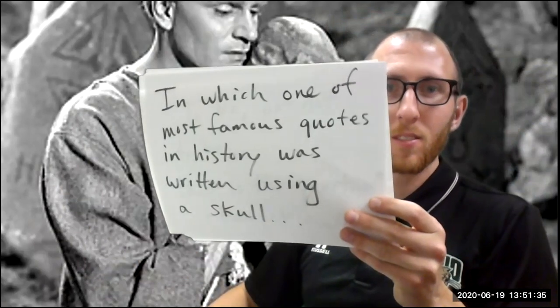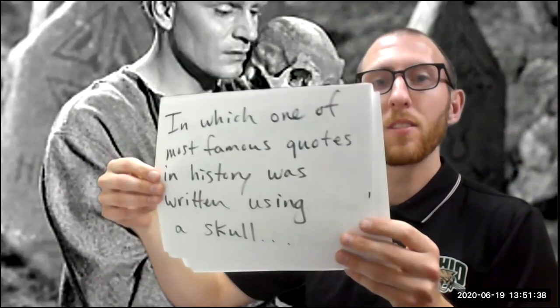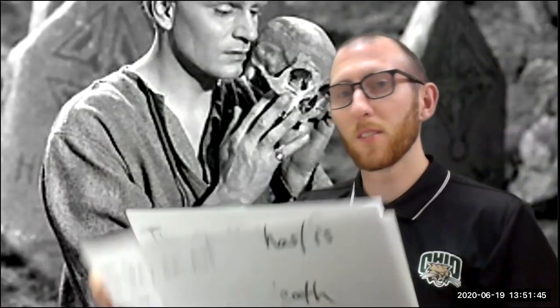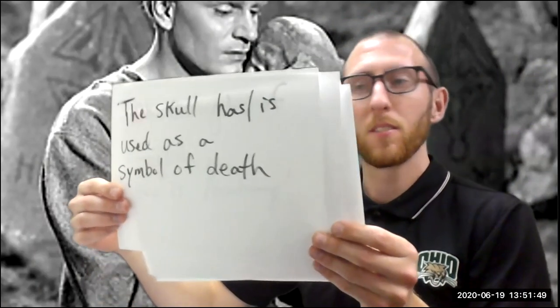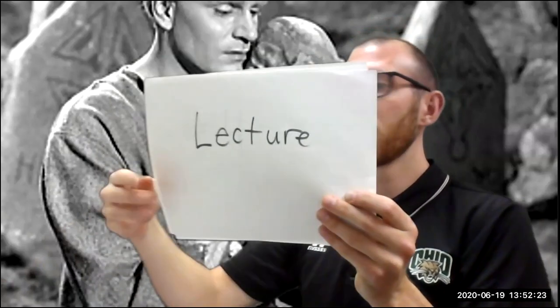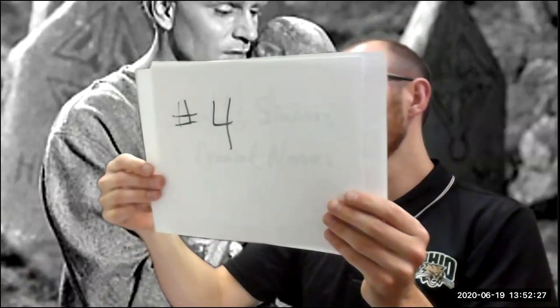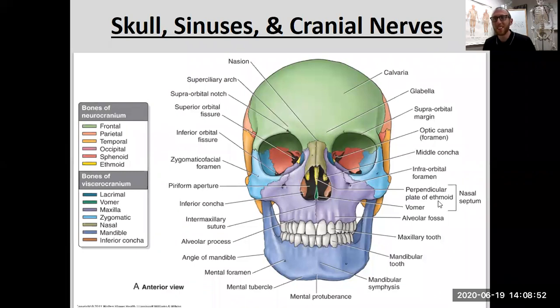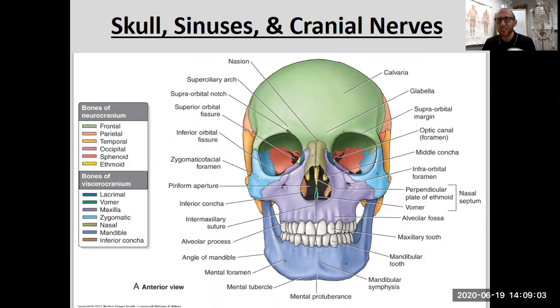Let's get started. Welcome to lecture number four. Hopefully you liked a little bit of a literature lesson with the Hamlet intro, but we are focusing on the human anatomy of the skull, sinuses, and cranial nerves today.